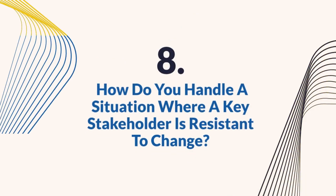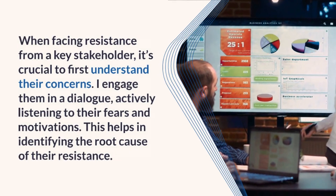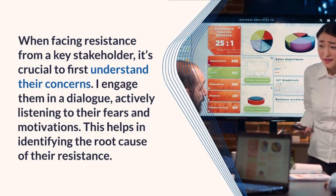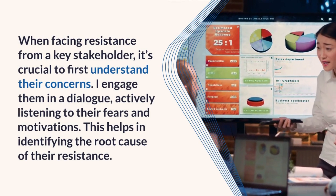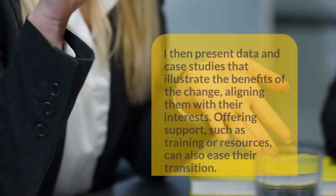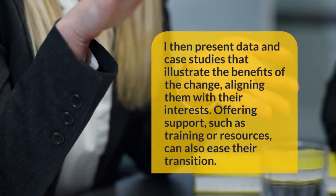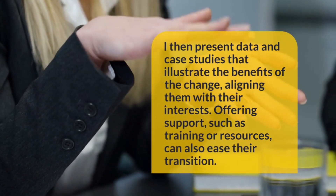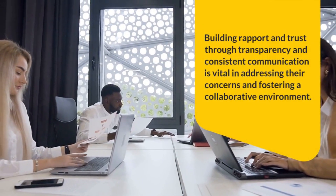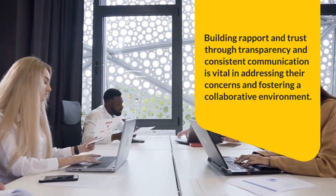Question 8: How do you handle a situation where a key stakeholder is resistant to change? When facing resistance from a key stakeholder, it's crucial to first understand their concerns. I engage them in a dialogue, actively listening to their fears and motivations. This helps in identifying the root cause of their resistance. I then present data and case studies that illustrate the benefits of the change, aligning them with their interests. Offering support, such as training or resources, can also ease their transition. Building rapport and trust through transparency and consistent communication is vital in addressing their concerns and fostering a collaborative environment.